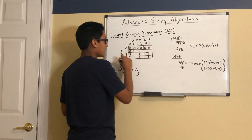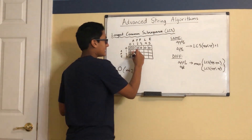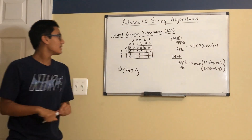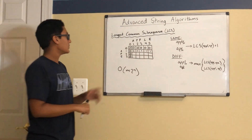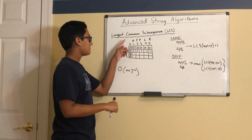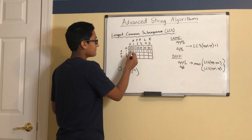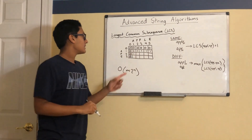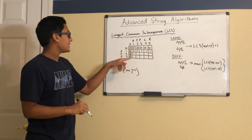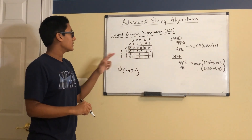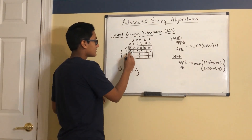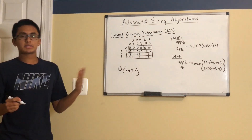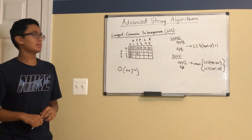All of them are going to be 1, since none of them are also equal to A. Next, when we look at the next row, we see that P and A are not equal, so we take the maximum of either 1 or 0, which comes to be 1. Then, when we look at P and P, they are equal, so we take this value and add 1 to it. Similarly, we can just fill out the rest of the table.